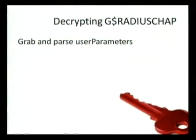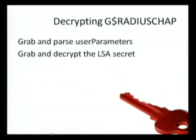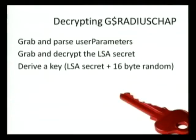To decrypt, you need to be on the domain controller as a domain administrator. First, you grab and parse the user parameter structure. Windows does have some undocumented API functions for this, but they're cumbersome to use, so I implemented it myself — it's not that hard. There are some offsets, typed linked value pairs, and the actual secret is stored in ASCII hex, so you convert it back to binary. Then you need to grab and decrypt the LSA secret, which requires domain administrator privileges. There's also a static key that Windows uses to scramble the LSA secret — I missed that step the first time, which is why my password recovery wasn't working.